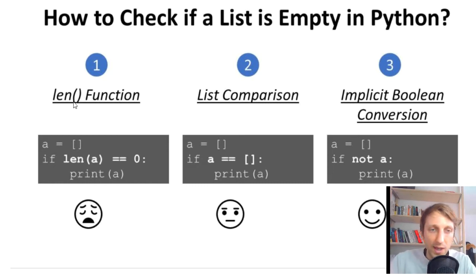The first way is to use a length function. This is used by coders that come from Java or C++. They just use a length function. So we create an empty list, a equals square bracket notation. Then we check if the length of this list is equal to zero. Very natural, it makes sense to write it this way, right?